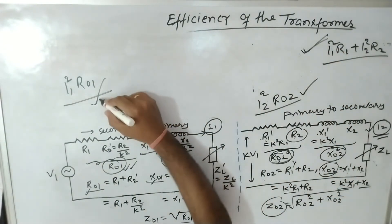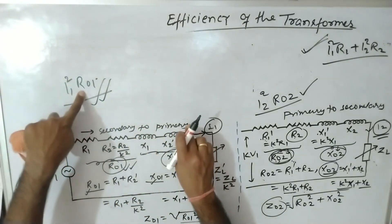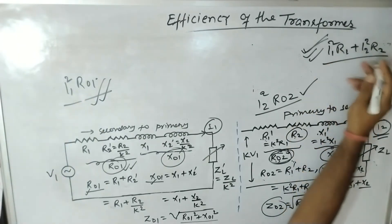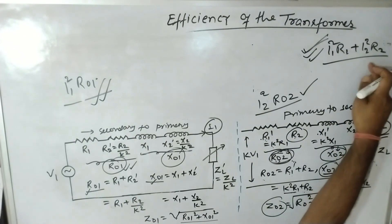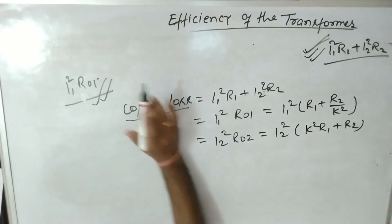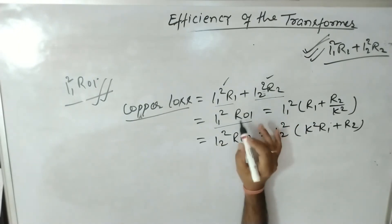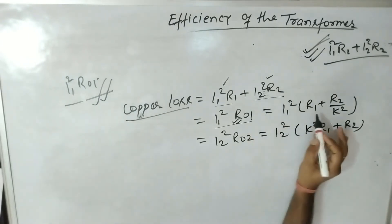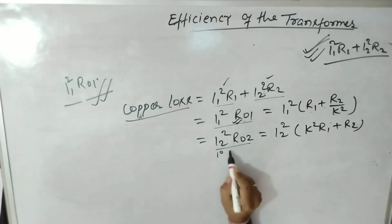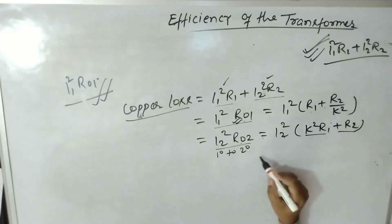When all elements are shifted from secondary to primary, the loss equation is I1²·R01. When all elements are shifted from primary to secondary, the loss equation is I2²·R02. And when all elements remain on their own sides, the copper loss is I1²·R1 + I2²·R2. Therefore, we can write: I1²R1 + I2²R2 = I1²R01 = I2²R02, where R01 = R1 + R2/K² and R02 = K²·R1 + R2.